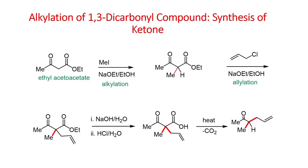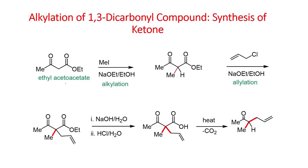Now let us see the reaction of some carbonyl compounds. Let us start with ethyl acetoacetate, which is a 1,3-dicarbonyl compound. When you react with sodium ethoxide — as we have already seen in the first and second lecture — if you have this ester, you have to use the corresponding sodium ethoxide, because if it undergoes a 1,2-addition reaction, then you will get the starting material back. When you treat sodium ethoxide with ethyl acetoacetate, it can deprotonate this acidic proton, and you generate the enolate.